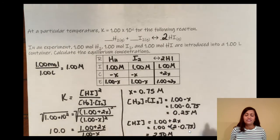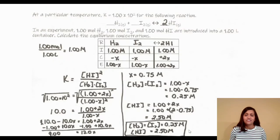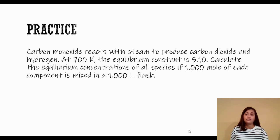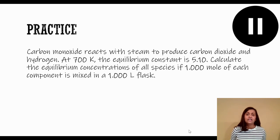Here is the worked sheet in case you need to reference it. Let's try the next one: carbon monoxide reacts with steam to produce carbon dioxide and hydrogen. At 700 K, the equilibrium constant is 5.10. Calculate the equilibrium concentrations of all species if 1.000 moles of each component is mixed in a 1.000-liter flask. Pause and solve on your own.